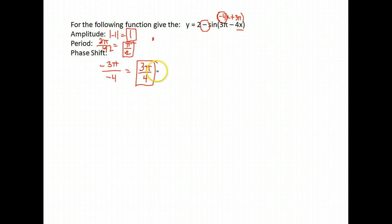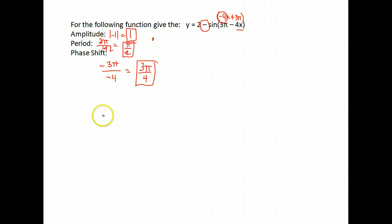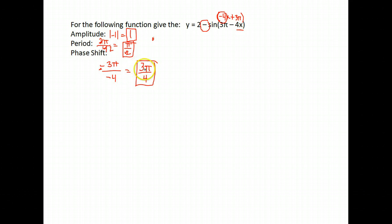So this graph will be shifted 3π/4 units to the right. Its period will be shortened to π/2, but it will still have an amplitude of 1. It will also be moved up 2.